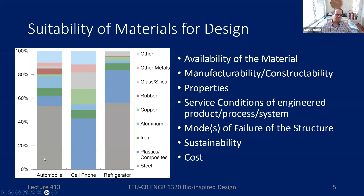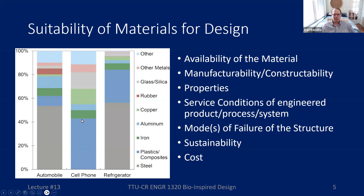Not everything is good for everything we want to build. For example, a car is more than half steel, and if you add in iron and aluminum, about three-quarters of it is basically those metals — very much driven by strength requirements. A cell phone, on the other hand, is about 40% plastic, because it doesn't have to be as strong. Refrigerators again rely heavily on steel but also quite a bit of plastic. So depending on what we want from an object, we choose materials based on those requirements.